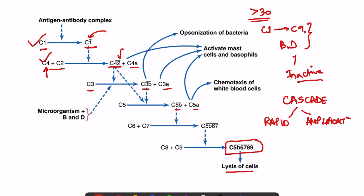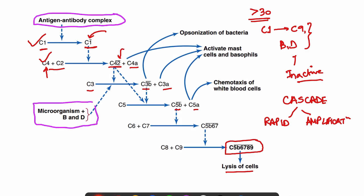There are three pathways of complement activation. One involves an antigen-antibody complex, another involves microorganism plus Factor B and Factor D, and a third pathway acts at the level of direct activation of C4 and C2.